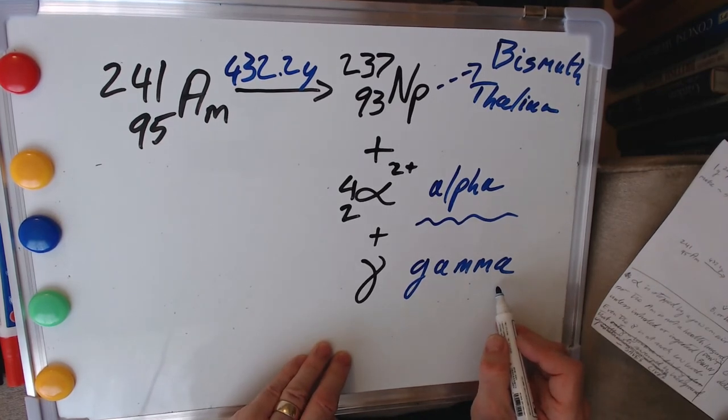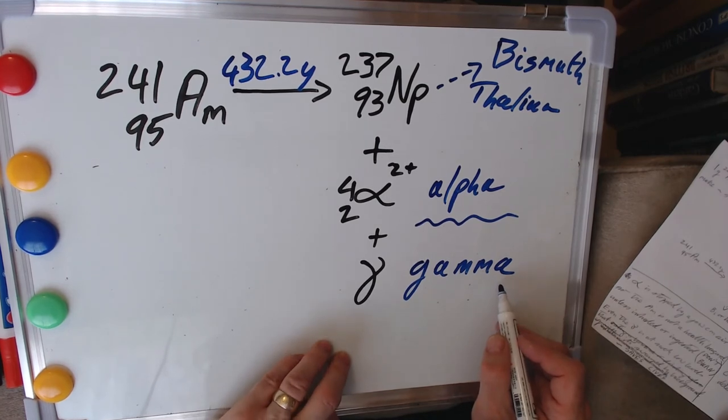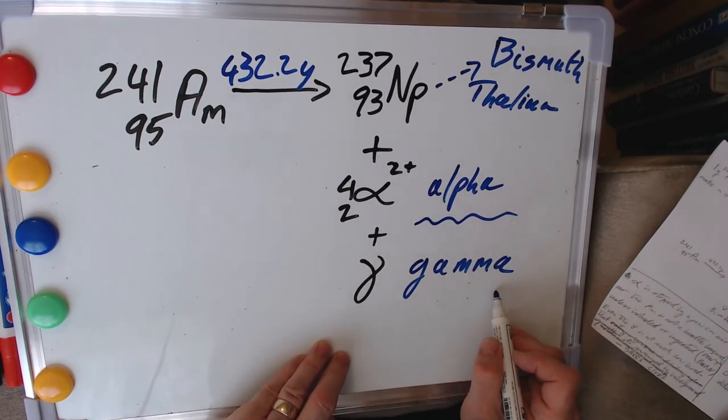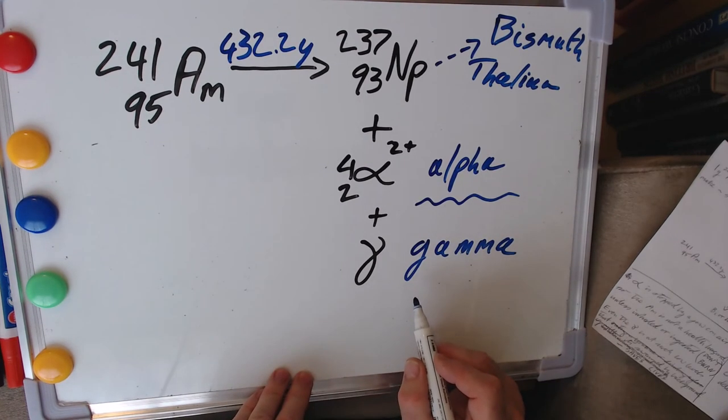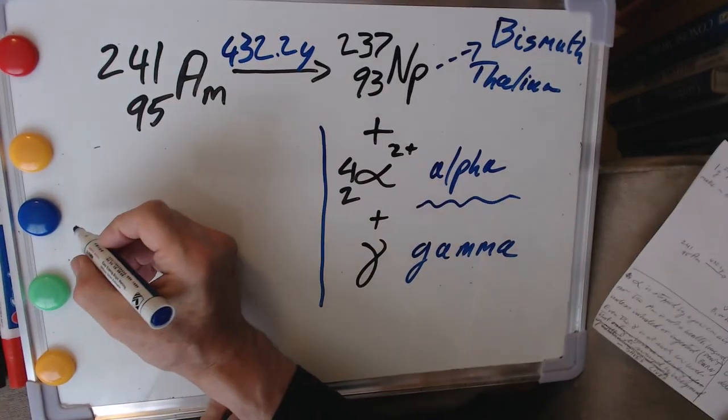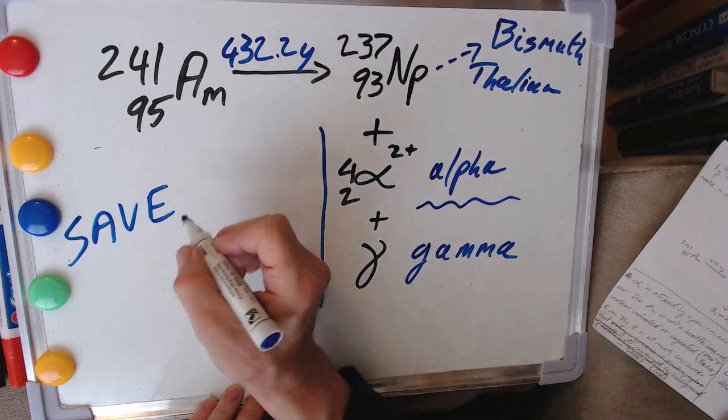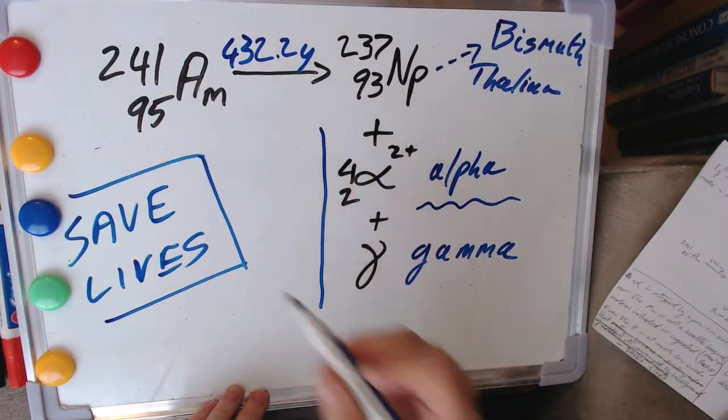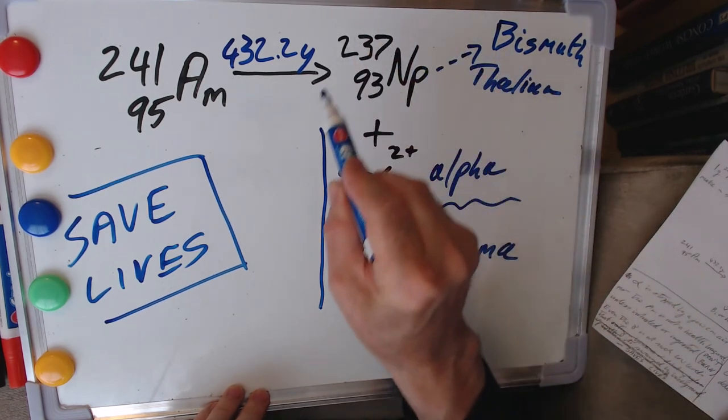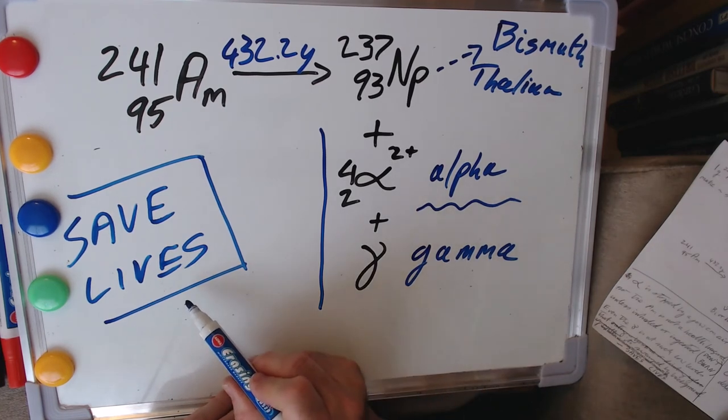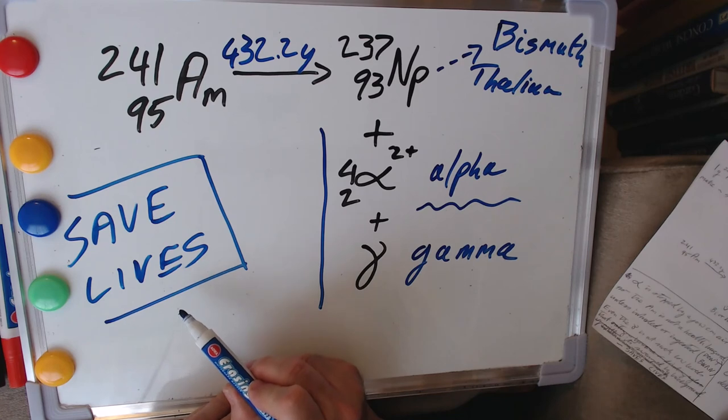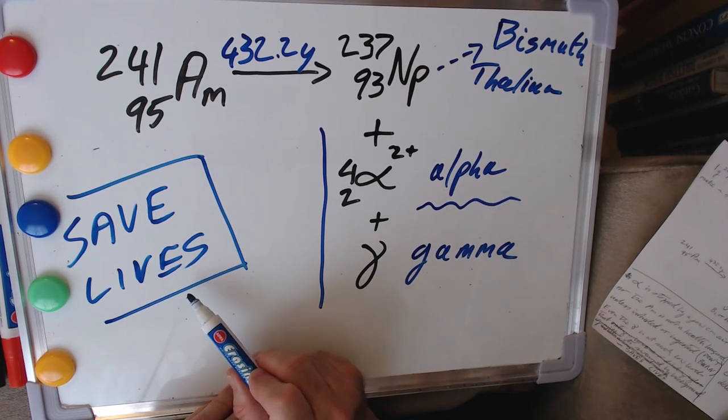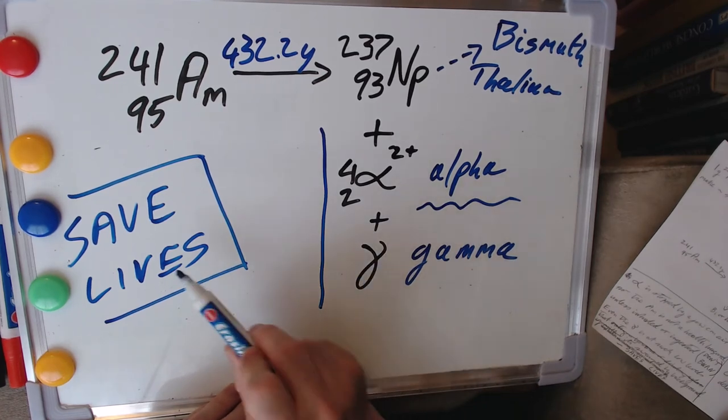And I think the thing to stress in all of this is that our smoke detector saves lives. So there is a minuscule risk associated with this material and what comes out of it, more than outweighed by the number of lives that have been and will be saved by having them in your house. Life is about balancing risk. That's inevitable. This is actually a pretty good balance.